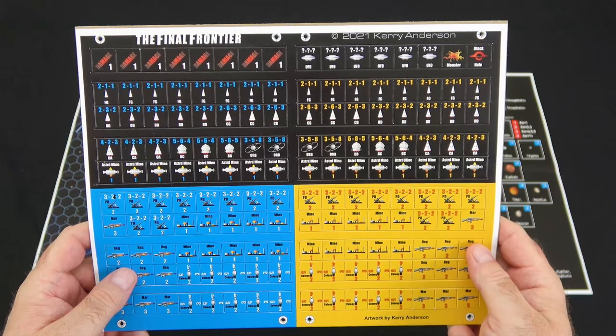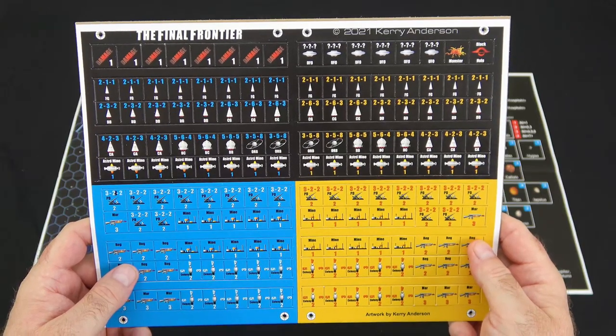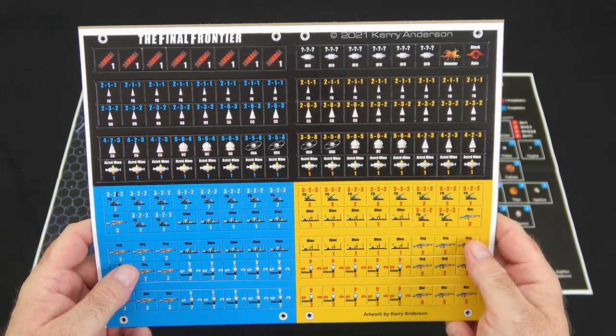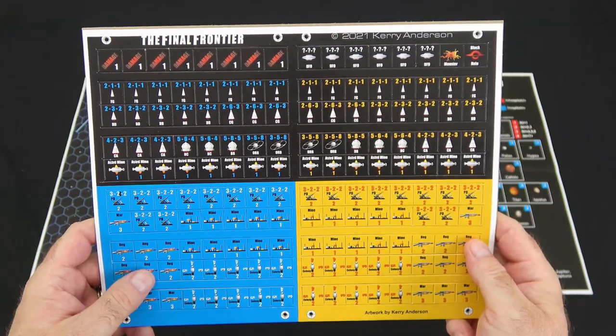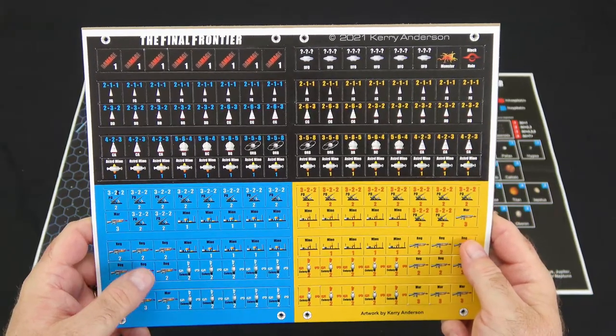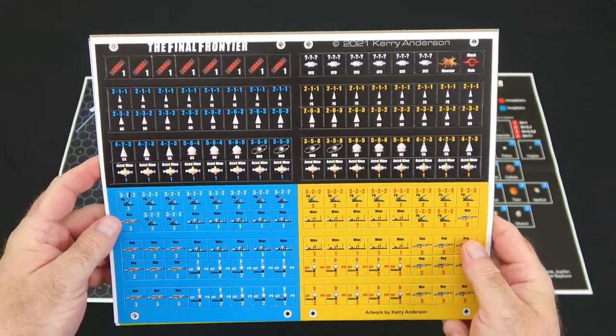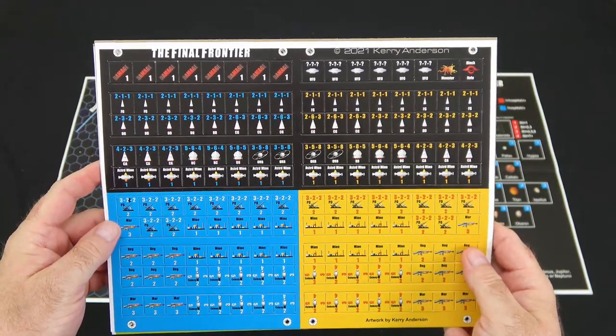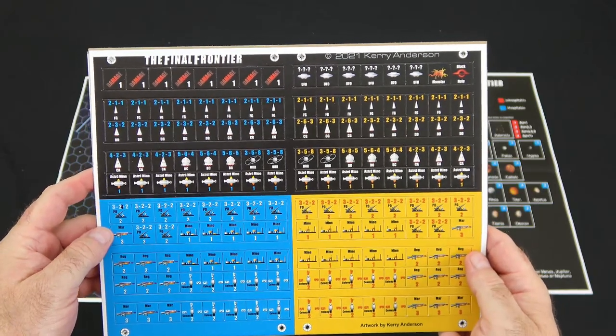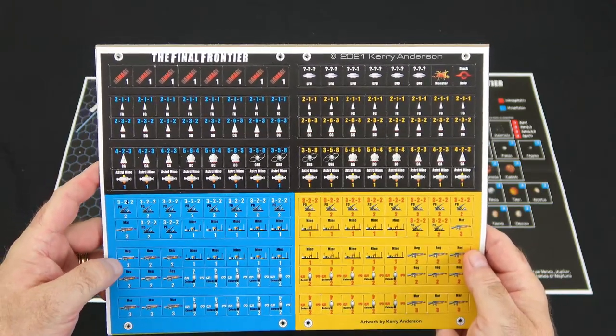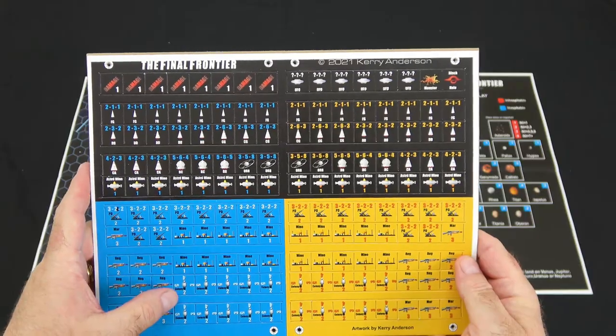Now we'll take a look at the counter sheets that come with the game. There are four different factions in the game: blue, yellow, green, and pink. The ground units will be the color of the faction with the unit on it, and then the space units will be black with the color of the text being the same as the faction color. We've got the blue and yellow here. We've got planetary defense, marine units, regular infantry, mines, and colonies here.